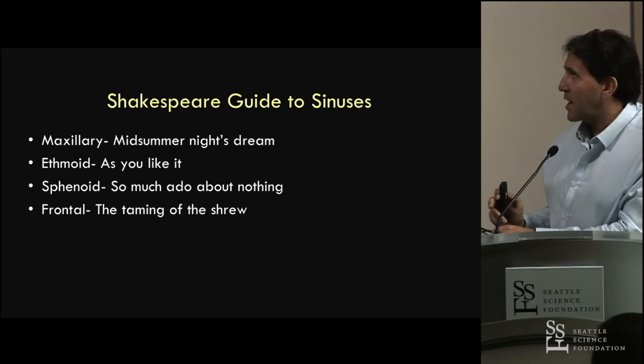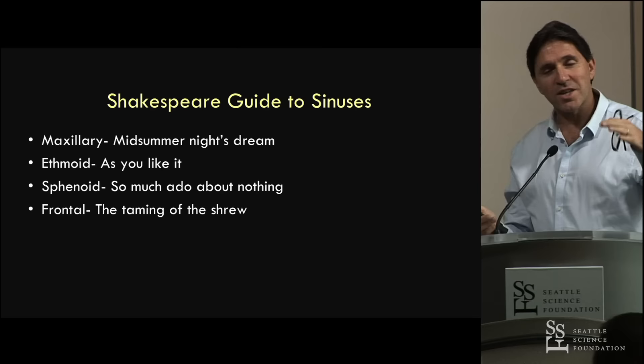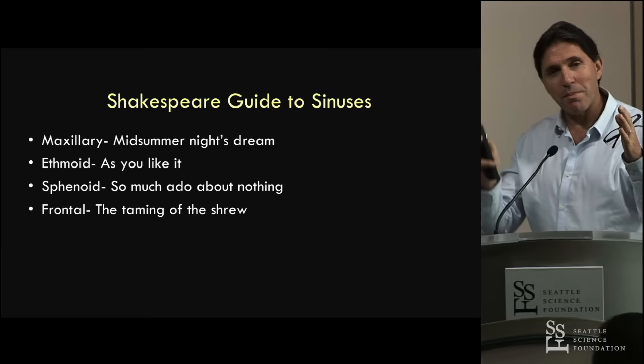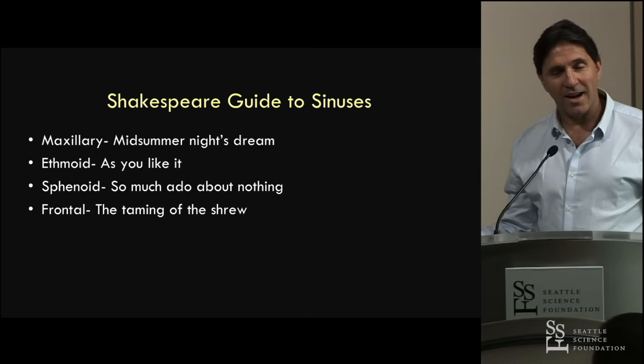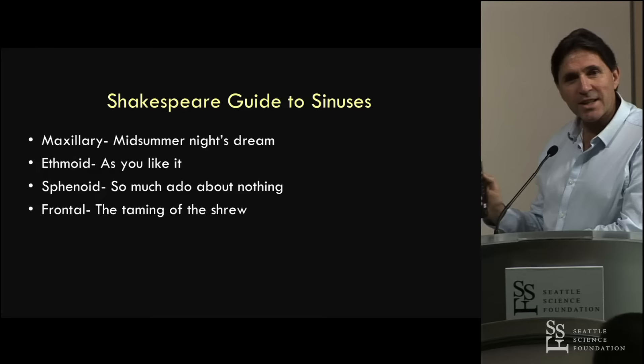The ethmoid is As You Like It - it's a very forgiving sinus. As long as you know where the skull base is, where the anterior ethmoid artery is, where the lamina papyracea is, and where your middle and superior turbinates are, everything in the middle can be taken out. The sphenoid is Much Ado About Nothing.